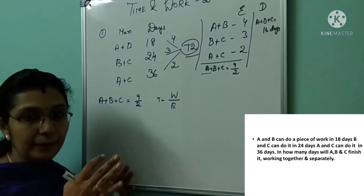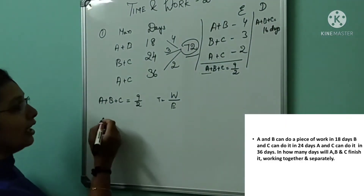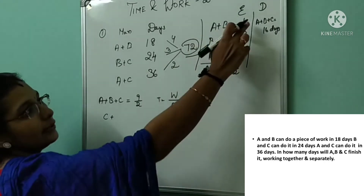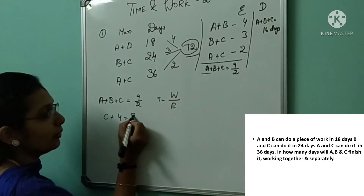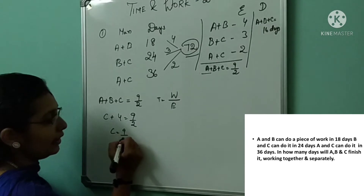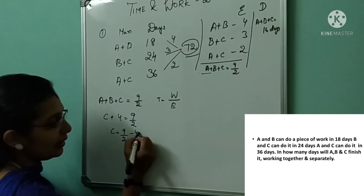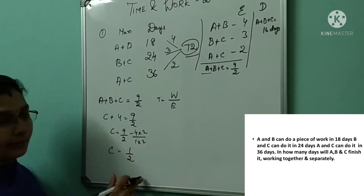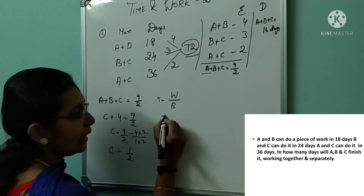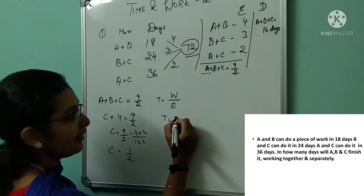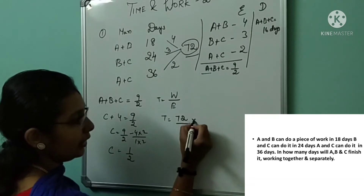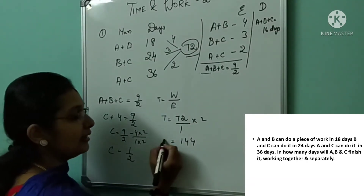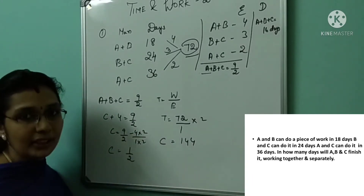For C: A + B + C = 9/2, and A + B's efficiency is 4, so C = 9/2 − 4 = (9 − 8)/2 = 1/2. The time taken by C is T = W/E = 72 ÷ (1/2) = 144 days. So C takes 144 days to complete the work individually.